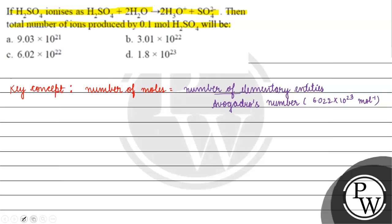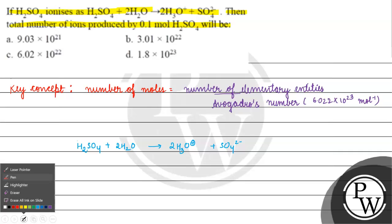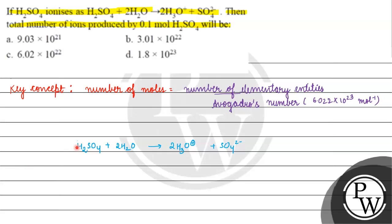Now, if you can see, we have H2SO4 ionizing to give 2H3O⁺ and sulfate ion. So we can say that if we have 1 mol H2SO4, then we have 2 mol H3O⁺ and 1 mol sulfate ion. So for 0.1 mol H2SO4, we will have 0.2 mol H3O⁺ and 0.1 mol sulfate ion, giving 0.3 mol ions total.